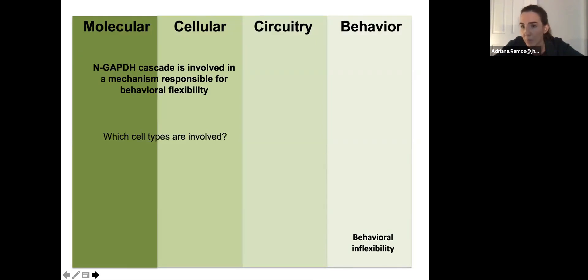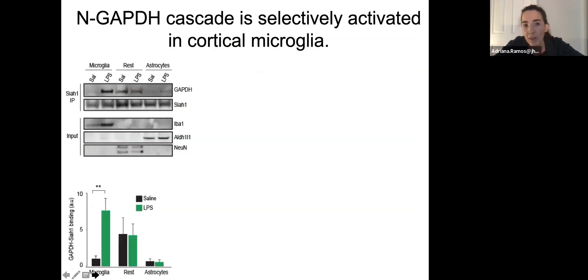At that point, we knew that the nuclear GAPDH cascade is involved in a mechanism responsible for behavioral flexibility, but we wanted to know which cell types were involved in that regulation. I addressed the activation of this cascade in a cell type-specific way, paying attention to microglia and astrocytes mainly that are the main cell types involving the provocation and resolution of inflammatory effects. It was very striking to see how microglia was the main cell type in which this activation was taking place. What I'm showing here is the binding between GAPDH and Siah1 as a way to show activation of the nuclear GAPDH cascade.